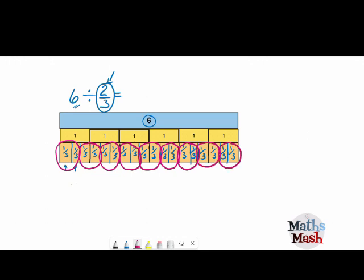So how many groups of 2 thirds do we have? We've got 3, 4, 5, 6, 7, 8, 9. We've got 9 groups of 2 thirds.